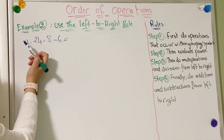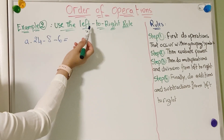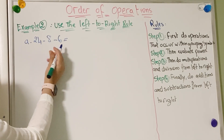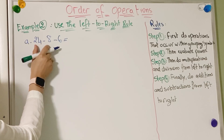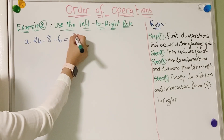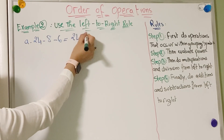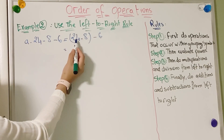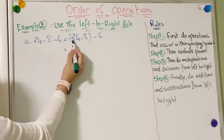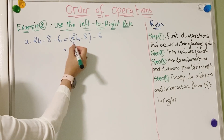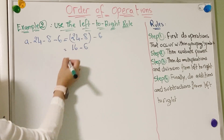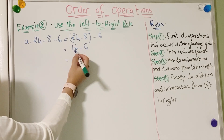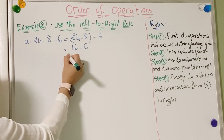Now let's move to the second example, where we use the left-to-right rule. We have 24 − 8 − 6. We start with the two numbers from the left: 24 − 8 = 16. Then we move right and subtract 6 from 16, which equals 10.